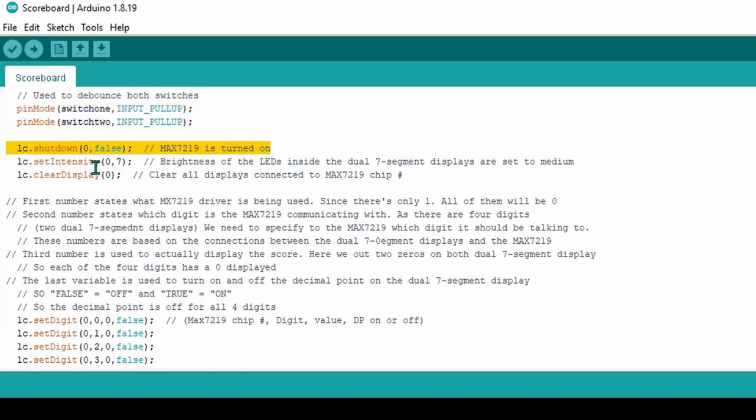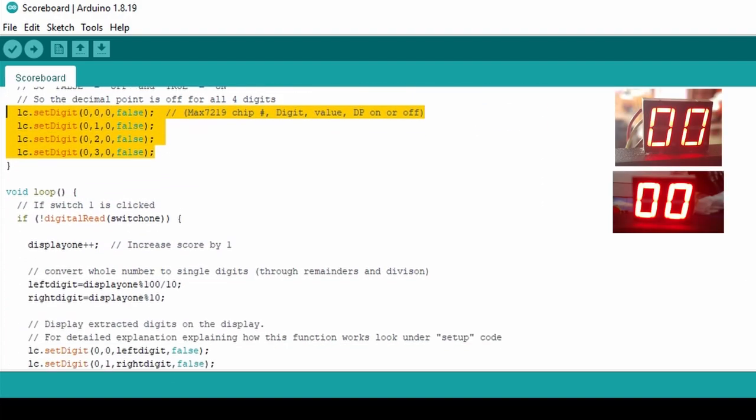Then here, we turn on the MAX7219 and set the brightness of the LEDs inside both of the dual 7-segment displays. This is a medium intensity. Then we clear both dual 7-segment displays to make sure that nothing is shown, so all the LEDs on both dual 7-segment displays are off. Then we put two zeros on both dual 7-segment displays.